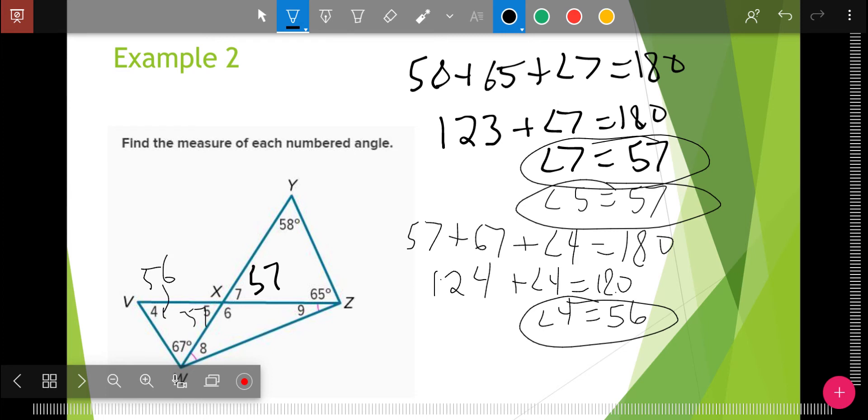Angle six. Angle six right here, six and seven make a straight line. So they're a linear pair. Or five and six make a straight line. They're a linear pair. Either way, I want to combine 57 plus angle six equals 180. So when I subtract 57, I get 123 for angle six.